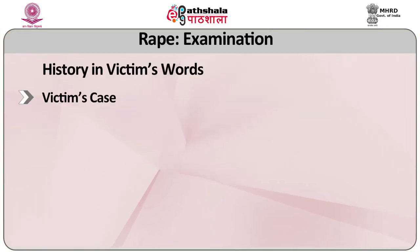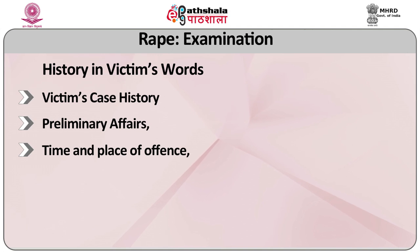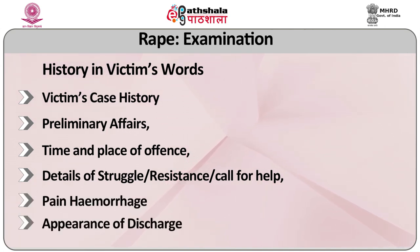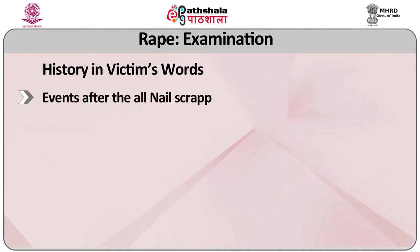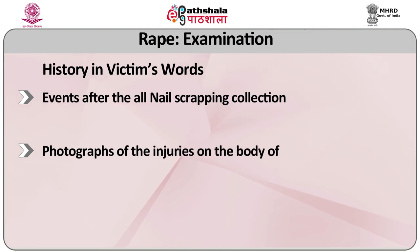Obtain and write history in the victim's own words, which should include the victim's case history, preliminary affairs, time and place of offence, details of struggle, resistance or call for help, pain, hemorrhage, appearance of discharge, events after the offence, nail scraping collection and their photography. Photography of injuries on the body of the victim provides very important clues.